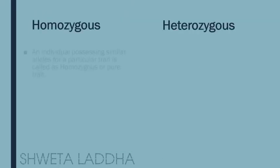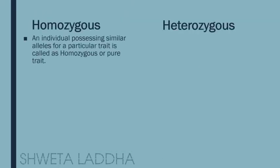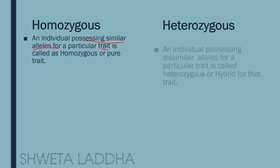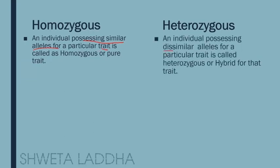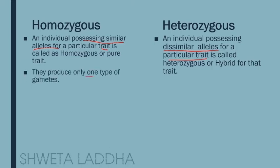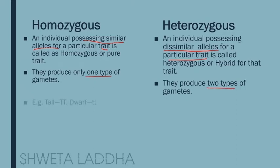Now let us see what is homozygous and heterozygous condition. Homozygous — very important — when an individual possesses similar alleles for a trait, it is a homozygous or pure trait. But if the individual possesses dissimilar alleles for a particular trait, we call it heterozygous, also called a hybrid trait. Homozygous produces only one type of gamete; heterozygous produces two types of gametes.